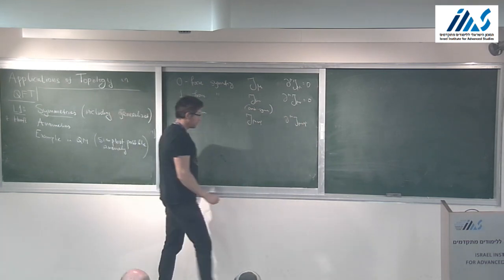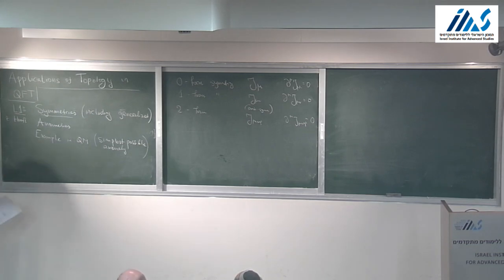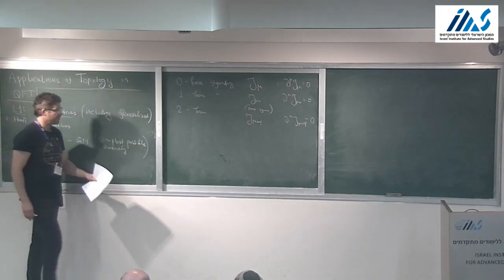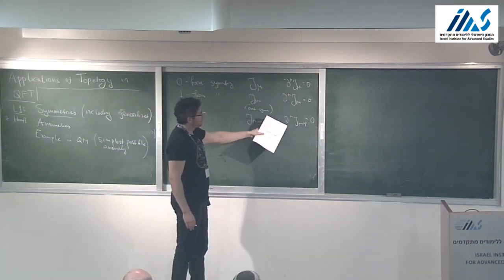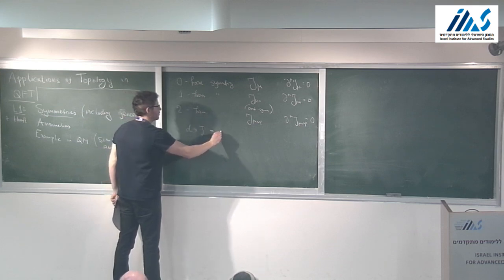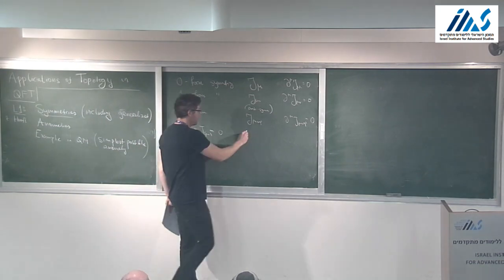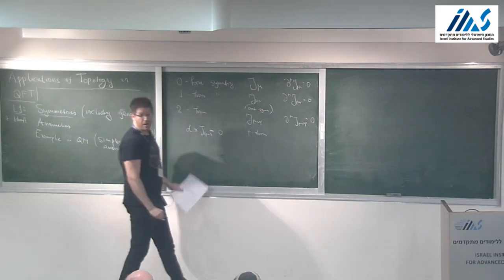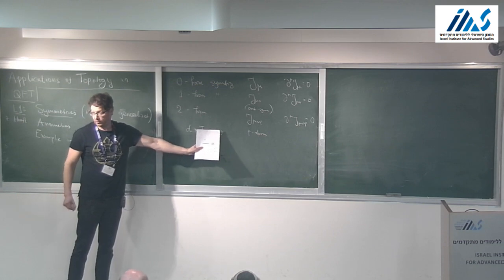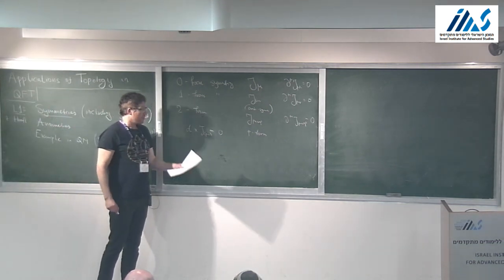These could be continuous symmetries of some D-dimensional quantum field theory. A convenient way to write these conservation equations is using differential forms. A P-form symmetry is associated to a P+1 current which satisfies the divergence-free conservation equation, d⋆J = 0. That's the general definition for a continuous P-form symmetry.